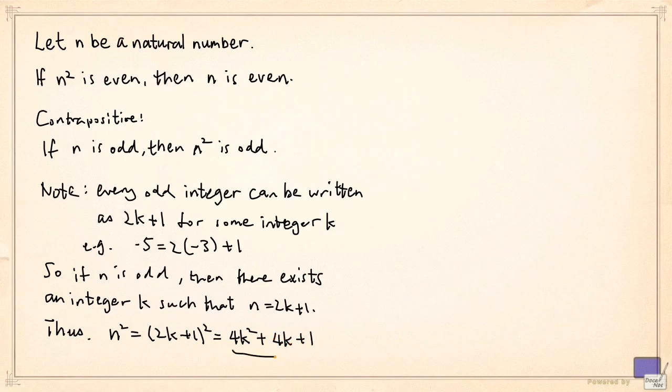And if we factor out 2 from these first two terms, I get 2 times 2k squared plus 2k and then plus 1. But now, this here, 2k squared plus 2k is an integer.